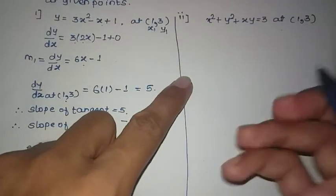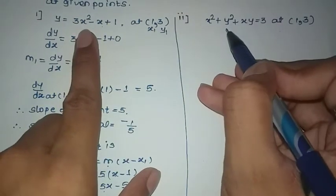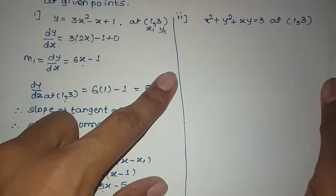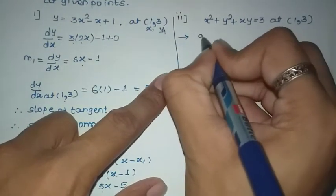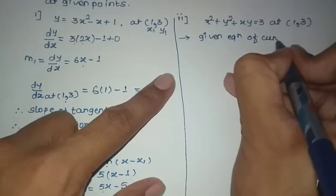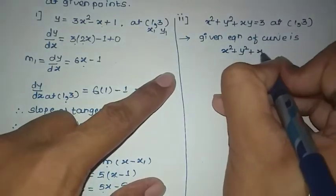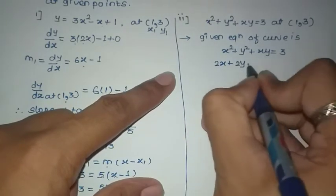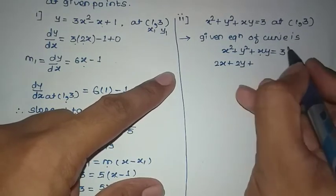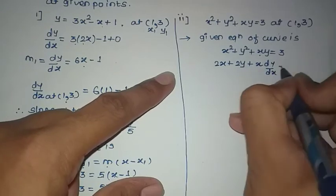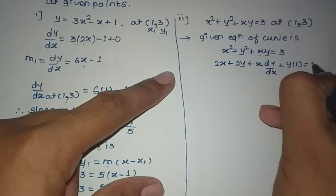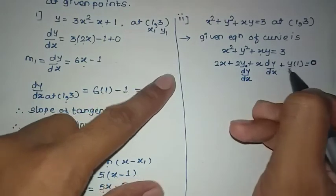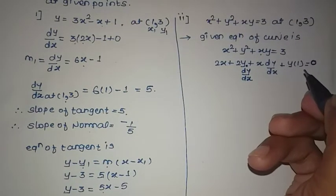Now the next question. The given equation of curve is x² + y² + xy = 3. We differentiate it. x² gives 2x, y² gives 2y dy/dx. For the xy term, we use the product rule: x times dy/dx plus y times 1. The derivative of 3 is zero. Since it is a composite function, wherever y appears, dy/dx will come. So we group the dy/dx terms together and the non-dy/dx terms together.